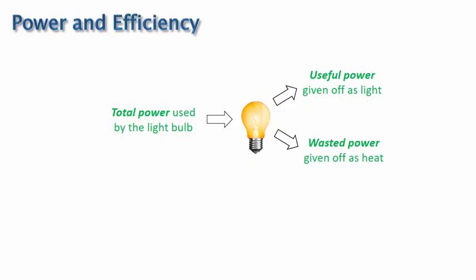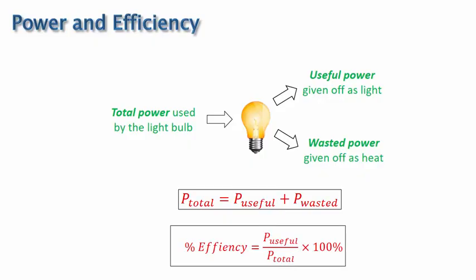As you might guess, the total power used by the light bulb equals the useful power plus the wasted power. The efficiency of the light bulb describes how much of the power is useful and how much is wasted. The equation for percent efficiency is the ratio of the useful power to the total power times 100%. To demonstrate the use of this equation,